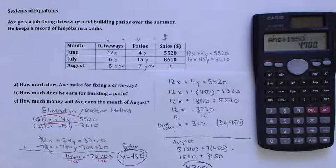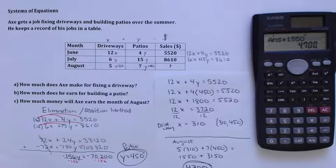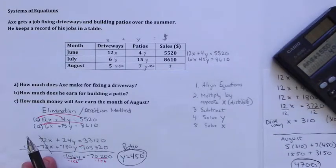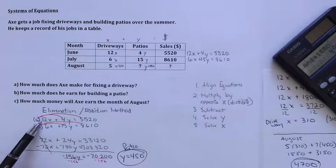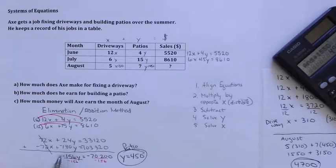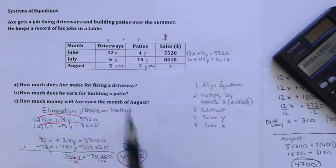That's how you use elimination. I'm just going to recap really quickly the steps. Align the equations, multiply by the opposite x, and then change all your signs and subtract. Solve for y, plug back in and solve for x. And then once you have the x and the y, you can answer the last question.